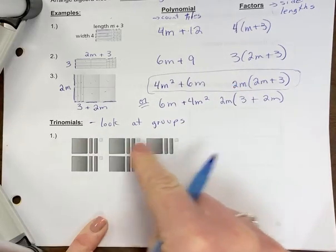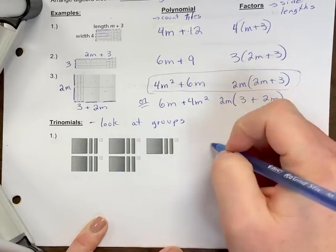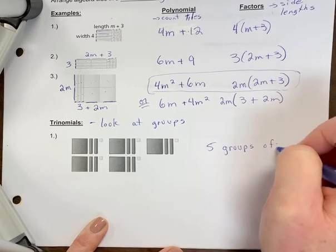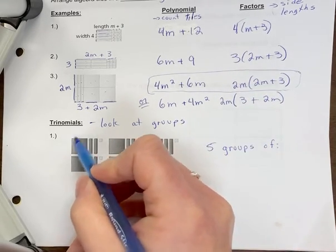So you can tell we have one, two, three, four, five of the same group. So we have five groups of, let's see what we have in here. So each group has an x squared tile.